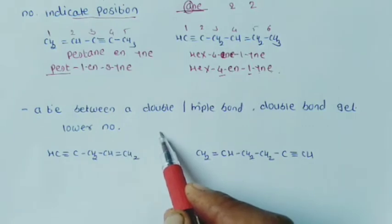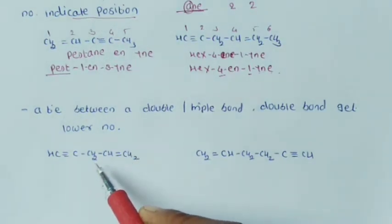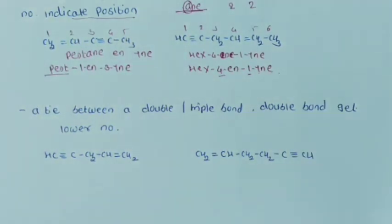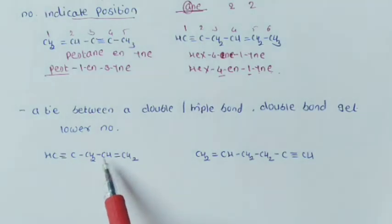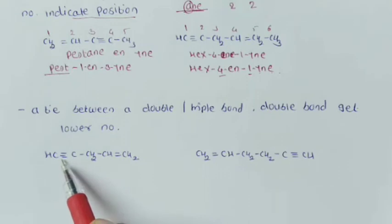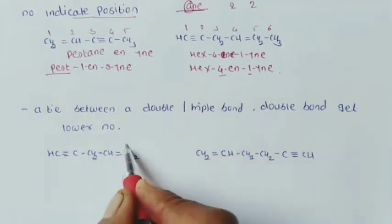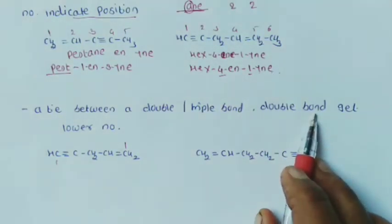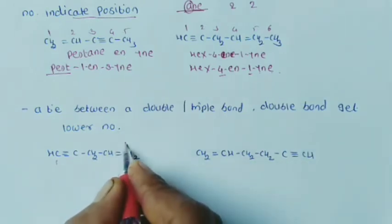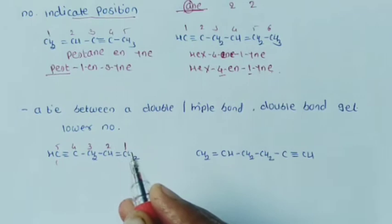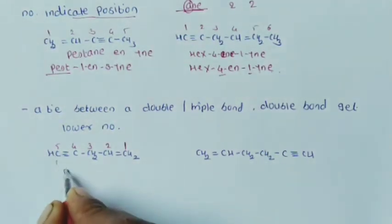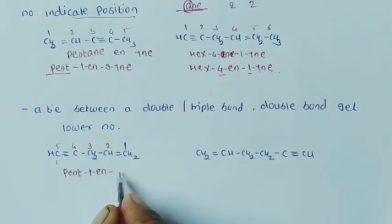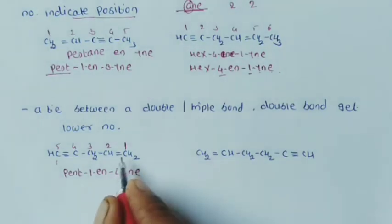The last rule for unsaturated hydrocarbons: when there is a tie between a double bond and a triple bond (both receive the same locant), the double bond gets the lower number. For example, CH≡C-CH2-CH=CH2 — 5 carbons (pentane). The double bond would start at carbon 1 and the triple bond also at carbon 1 from the opposite end. Since there is a tie, the double bond is given the lower number. Numbering: 1, 2, 3, 4, 5. The IUPAC name is pent-1-en-4-yne.